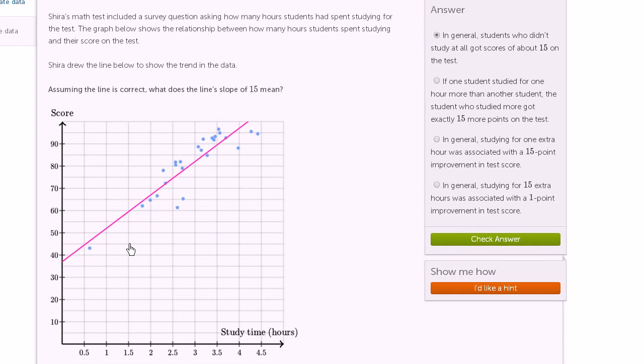I should be increasing in the vertical direction by 15. And you see that. If we increase by 1 hour here, we increase by 15% on the test. Now, what that means is that the trend it shows is that...